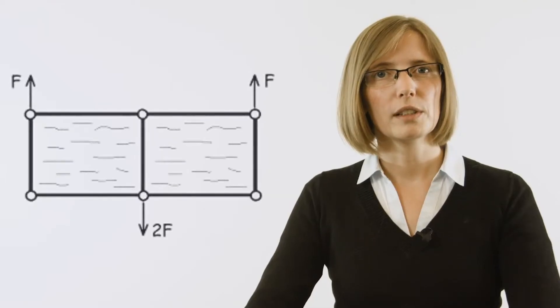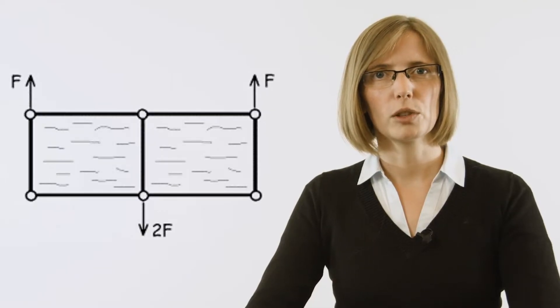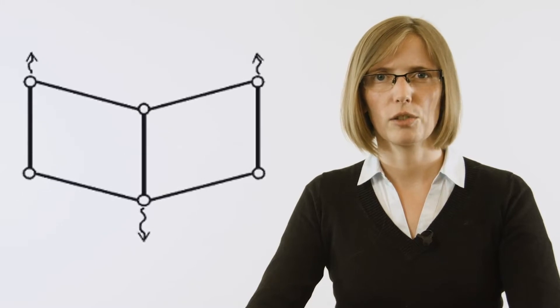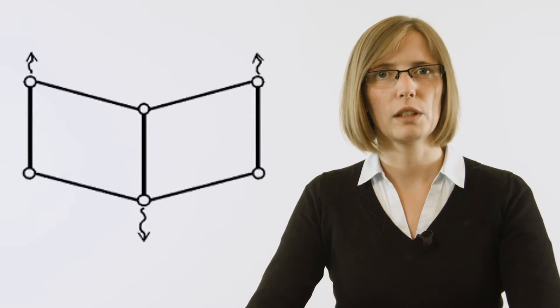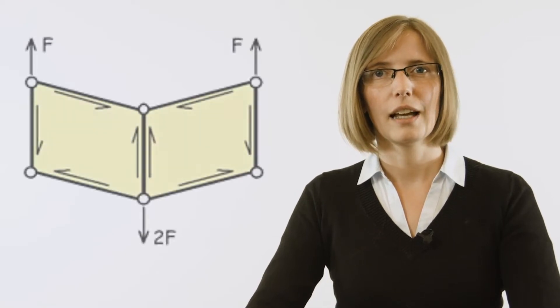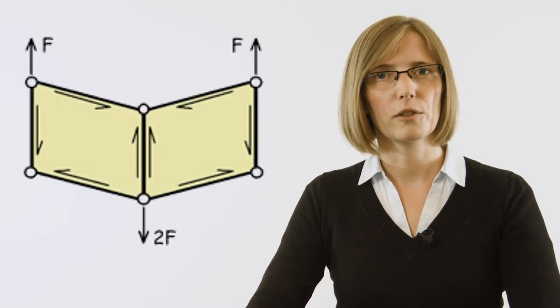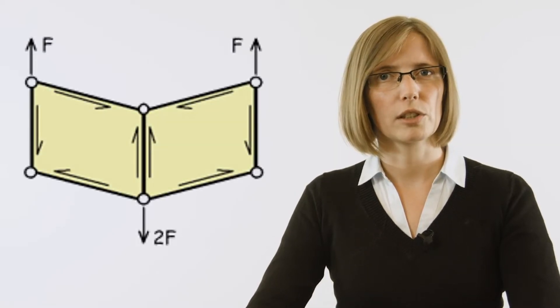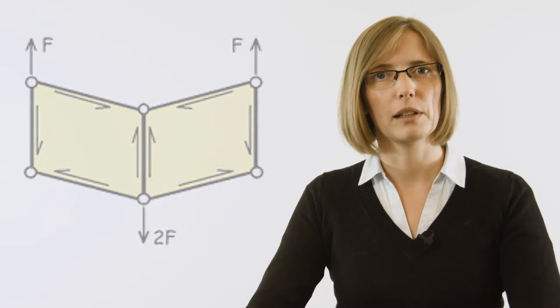When you take the sheets out and apply a downward force in the middle of the structure, the rectangular structure of each element would deform into a diamond shape. This deformation is resisted when adding the sheets, and we would therefore end up with a structure that can keep its shape under the applied loading.